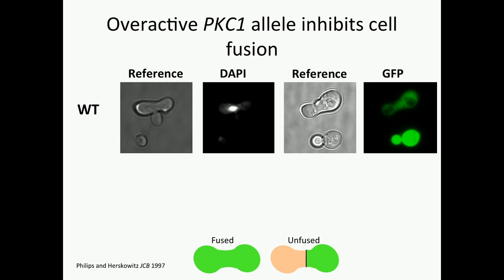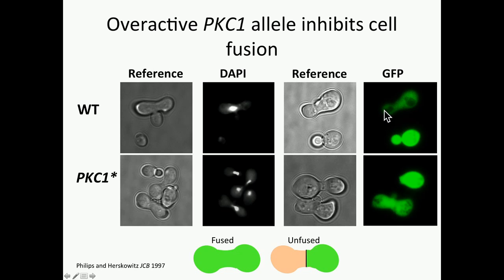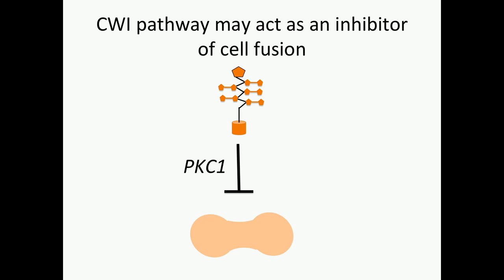Phillips and Herskowitz showed in 1997, and I've recapitulated here, that if we mate two wild-type cells, we see the formation of a nice diploid zygote with a single diploid nucleus. If one mating partner starts out with cytoplasmic GFP, that marker can transfer, indicating that the cell wall has degraded, the plasma membrane has fused, and we get mixing of the cytoplasmic contents. However, if you mate against this hyperactive PKC1 allele — PKC1* — you can see in a proportion of cases two distinct nuclei and a lack of transfer of this cytoplasmic marker, indicating that the cell wall hasn't degraded and the two cells have not fused. This leads to the hypothesis that PKC1 and the cell wall integrity pathway may act as a negative regulator of cell fusion.